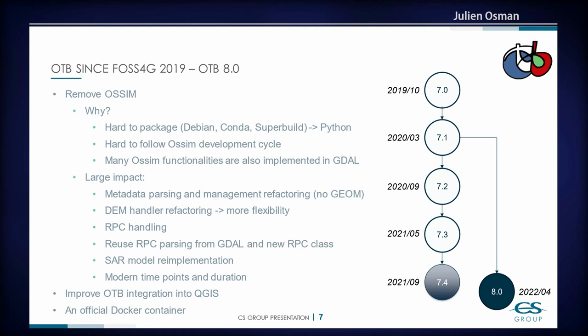Version 8 also contains improvements to the QGIS plugin, which I will present next. And last but not least, we now have an official Docker image on Docker Hub, so you no longer need to install OTB directly on your computer if you prefer to use a Docker container.